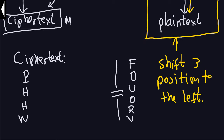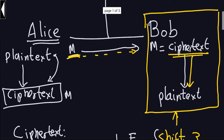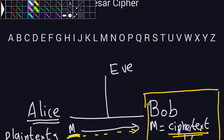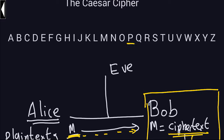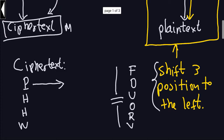Let's start the decryption process. We need to transform the letter P by shifting three positions to the left. Looking at the alphabet, we find P and move left three positions — first, second, third — so P is transformed into M. I'll mark that transformation with an arrow.